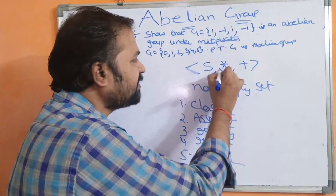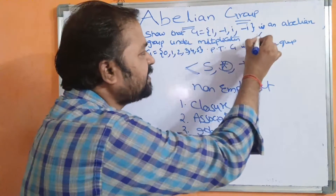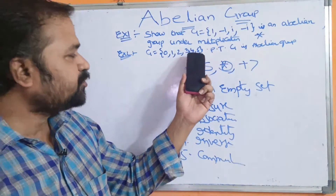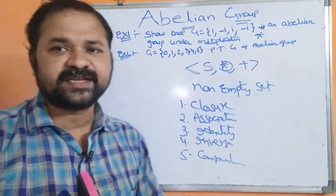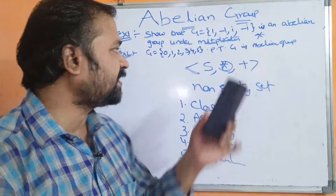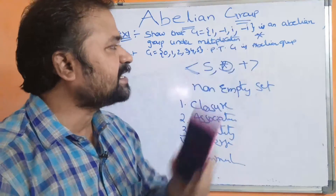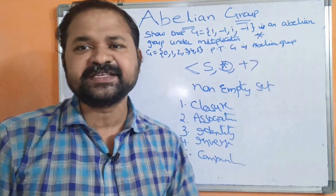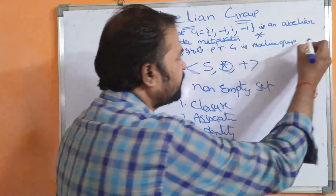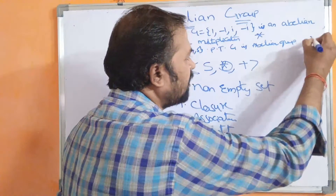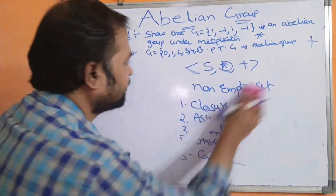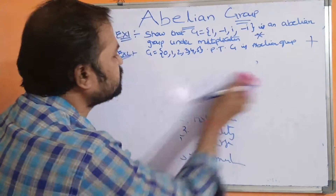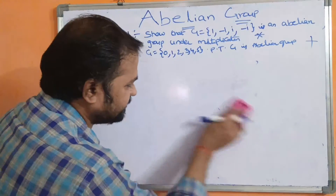For the first example, we have to perform only the multiplication operation. The second example: G = {0, 1, 2, 3, 4, 5} — prove that G is an abelian group. Here no operation is specified, so let us do the binary operation class. We will solve these two examples alongside the properties.